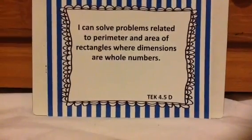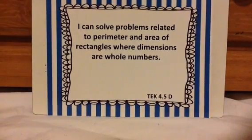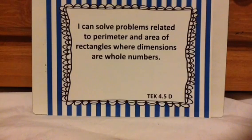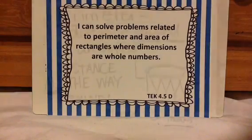Hi scholars, let's look at TEKS 4.5d. It says I can solve problems related to perimeter and area of rectangles where the dimensions are whole numbers. Dimensions are length and width. This video is just going to be perimeter. It's going to be part 1 and then part 2 will be area. So let's get started.